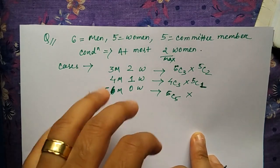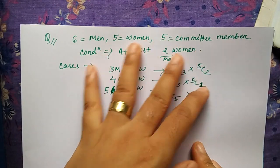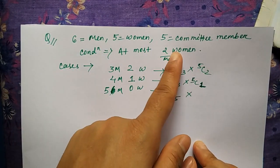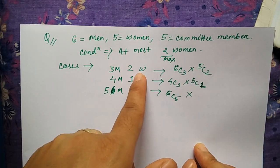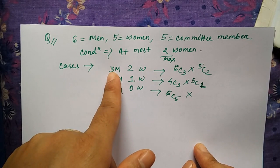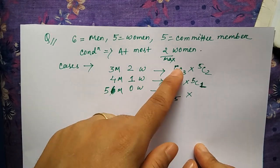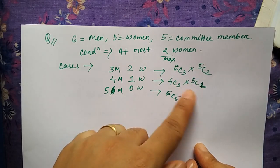We'll see a different question now. Actually it is the same condition - six men, five women, five committee members. The condition is at most two women. To maintain at most two women, at most means maximum, so women can be two, one, or zero. To make the committee of five people: three men accordingly, four men, and five men. So the condition will be 6C3×5C2, 6C4×5C1, and 6C5×5C0 accordingly.